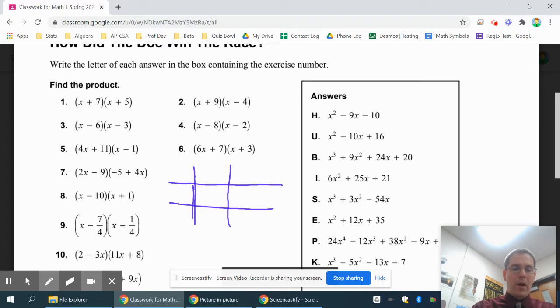So if I'm using my box method, remember I basically need to put my first thing going down the front of the box, so that's 4x and plus 11 if I was going to do number 5. 4x plus 11, and then I put my second thing on top of the box, so that's x minus 1.